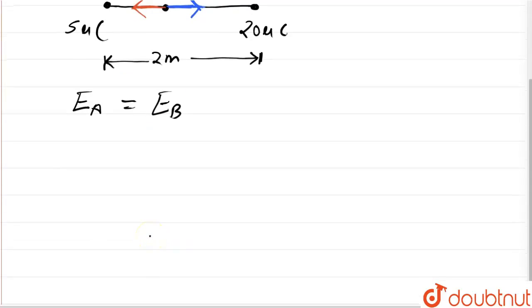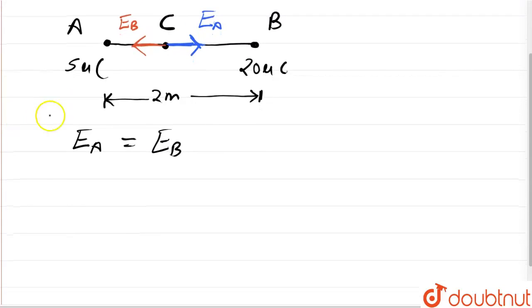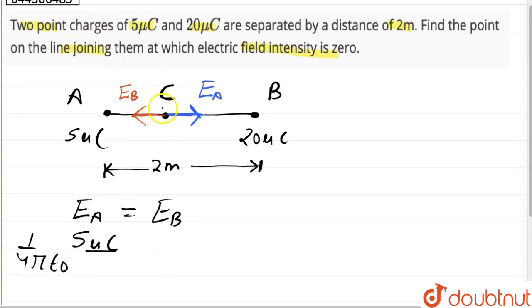Now let us write down the value of these electric field intensities: 1 upon 4π epsilon 0. Now the charge for EA would be 5 micro coulomb. Let us also take the distance from A to C as x. This distance as x. So this distance from C to B would be 2 minus x.